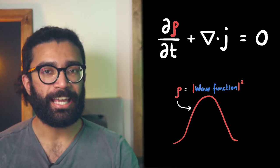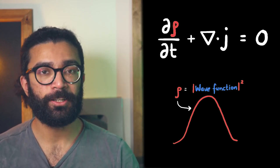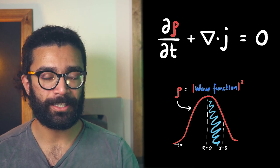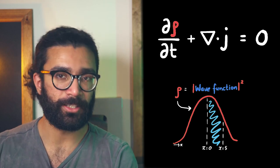Now remember, we had to find the area under our rho function between two points in space in order to work out the probability that a particle would be found between these two points.